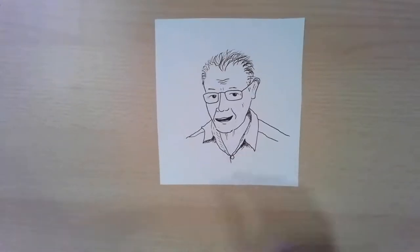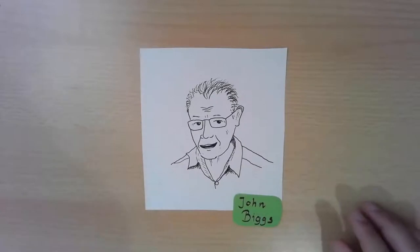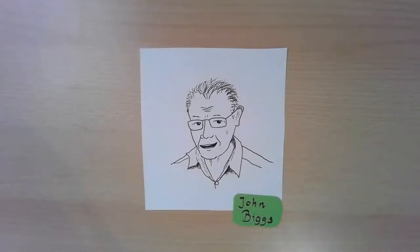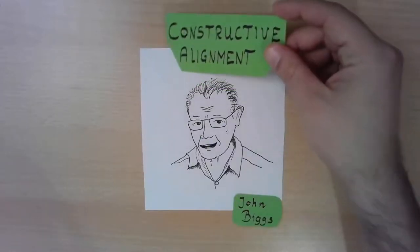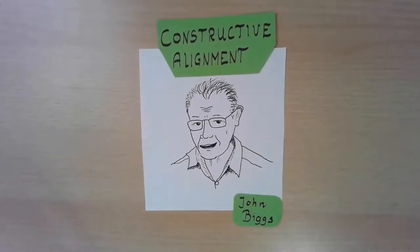I'm going to start by introducing this man to you. This is Professor John Biggs. He originates from Tasmania and he worked as a professor in pedagogical psychology in Australia, Canada, Great Britain, and also Hong Kong. John Biggs invented the idea of the constructive alignment model. His question was: how can we make sure that our students are going to achieve the intended learning outcomes of the course?